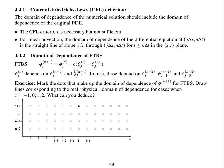You can fill in the domain of dependence. This represents phi at position j time n plus 1. Pause the video to mark on the diagram the points which are in the domain of dependence — which points influence this point? At time n plus 1 it depends on time level n at positions j and j minus 1. Those two points depend on three points, which in turn depend on four points, and so on.